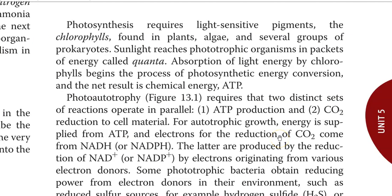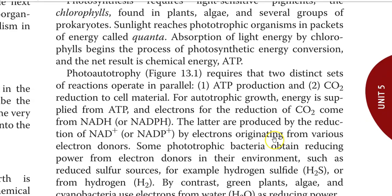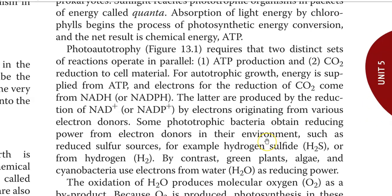Photosynthesis requires light-sensitive pigments, the chlorophyll, which is commonly found in plants, algae, and group of prokaryotes, especially the cyanobacteria. Sunlight reaches the phototrophic organism in packets of energy referred to as a quantum. Absorption of the light energy by chlorophyll begins the process of photosynthetic energy conversion, and this finally results in the formation of chemical energy, that is, ATP.